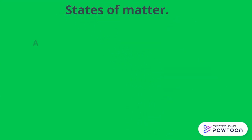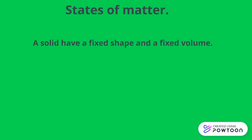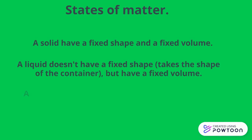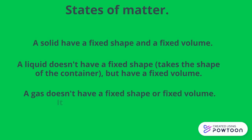States of matter. A solid has a fixed shape and a fixed volume. A liquid doesn't have a fixed shape — it takes the shape of the container — but has a fixed volume. A gas doesn't have a fixed shape or a fixed volume; it occupies the container it is in.